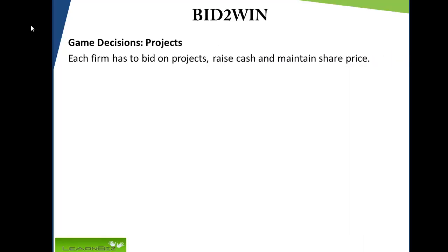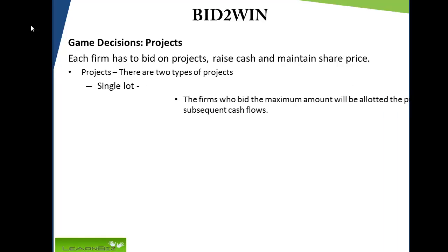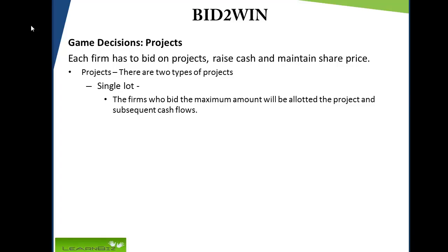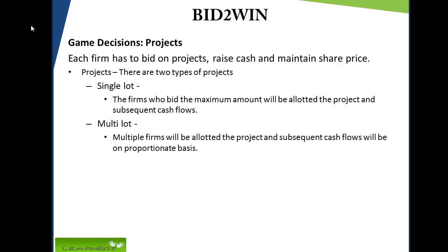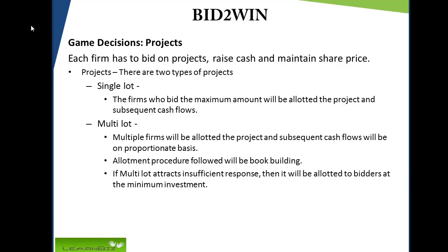Game decisions: each firm has to bid on projects, raise cash and maintain share price. There are two types of projects. Single lot: the firm that bids the maximum amount will be allotted the project and subsequent cash flows. Multi lot: multiple firms will be allotted the project and subsequent cash flows will be on a proportionate basis. Allotment procedure followed will be book building. If a multi lot attracts insufficient response, then it will be allotted to bidders at the minimum investment.